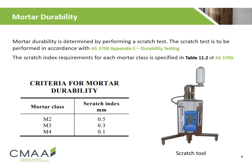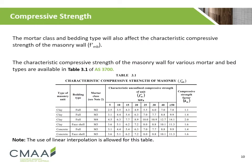The scratch index requirements for each mortar class are specified in Table 11.2 of AS3700. The characteristic compressive strength of the masonry wall is also affected by the mortar class and the bedding type. The characteristic compressive strength for various mortar and bedding types can be found in Table 3.1 of AS3700.